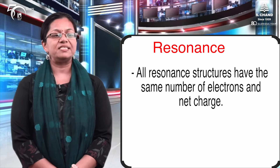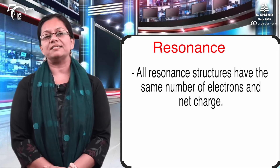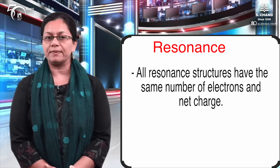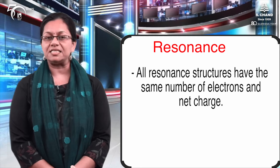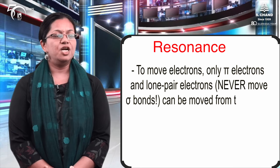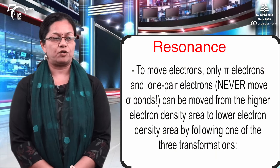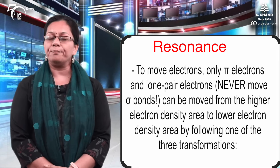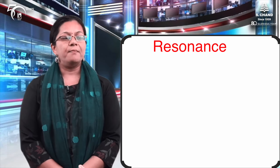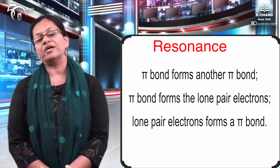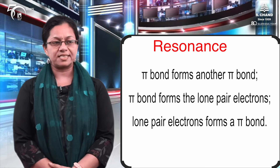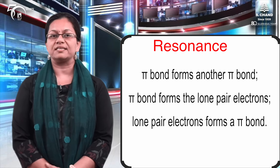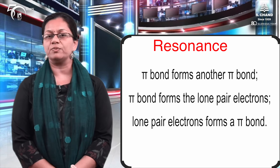All resonating structures have the same number of electrons and the same net charge — the formal charge on any compound remains the same across all resonating structures and cannot be changed. We are only changing the position of the electrons from one atom to another. To move the electrons, only the pi electrons and lone pair electrons can be moved. Sigma bond electrons do not move at all — only multiply bonded electrons or lone pairs can show movement. A pi bond can form another pi bond at a different position, and a lone pair can be moved to form a multiple bond, but the number of sigma bonds remains the same.